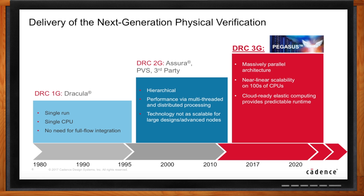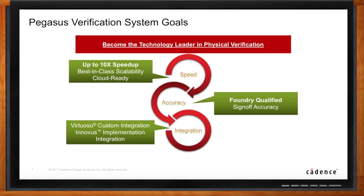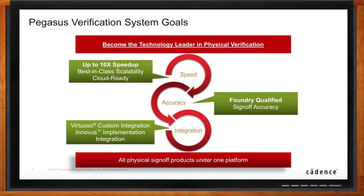When we started working on the Pegasus tool, we had pretty simple goals. First, an order-of-magnitude speedup — 10x versus current solutions — driven by CPU scalability. Customers have more and more CPUs, so it has to have best-in-class scalability. It also has to be cloud-ready, because more and more customers — especially mid-sized and small-sized — want to use the cloud for peak usage rather than buying 1,000 CPUs for one or two uses per year. And of course, it has to be foundry-qualified.